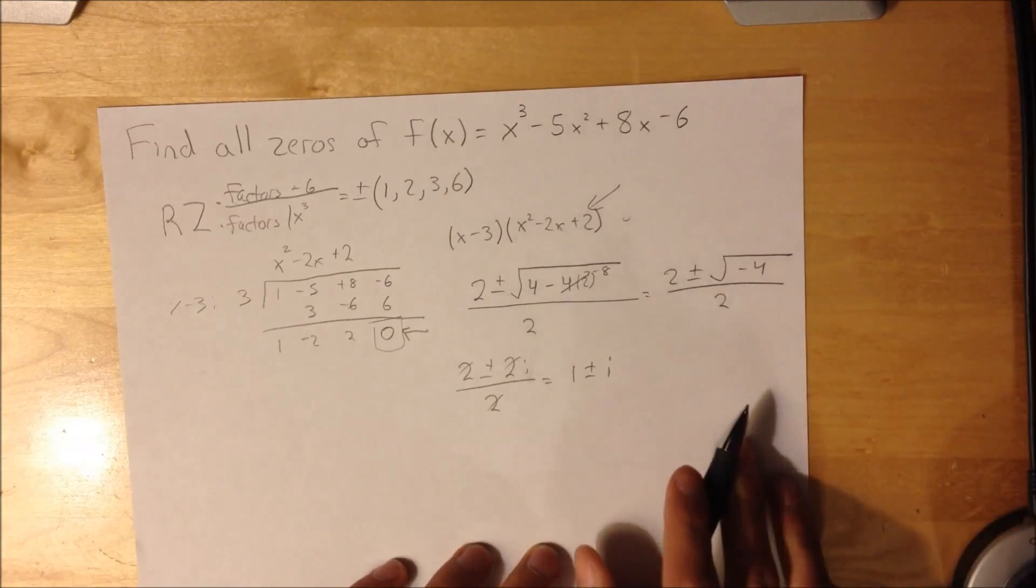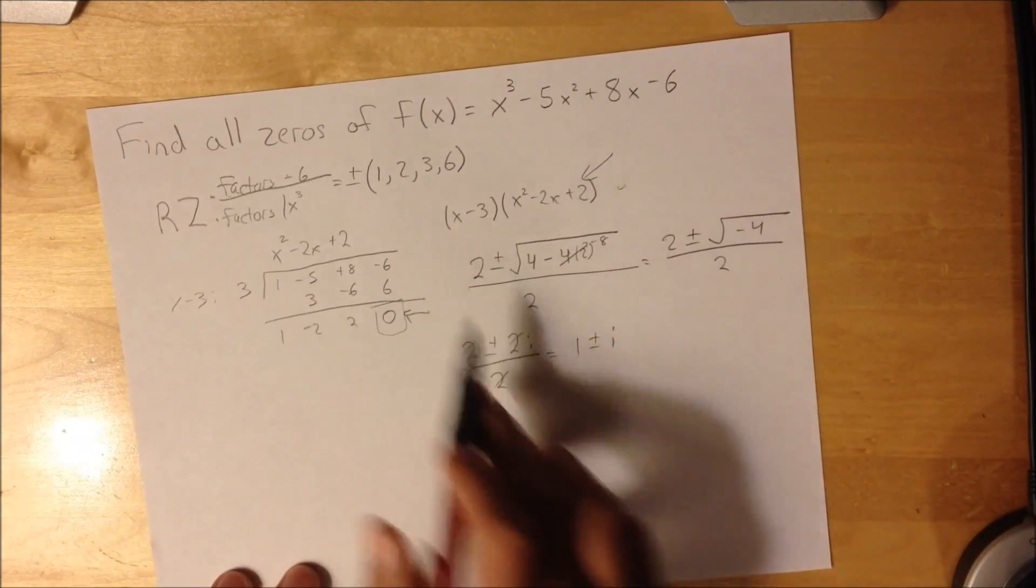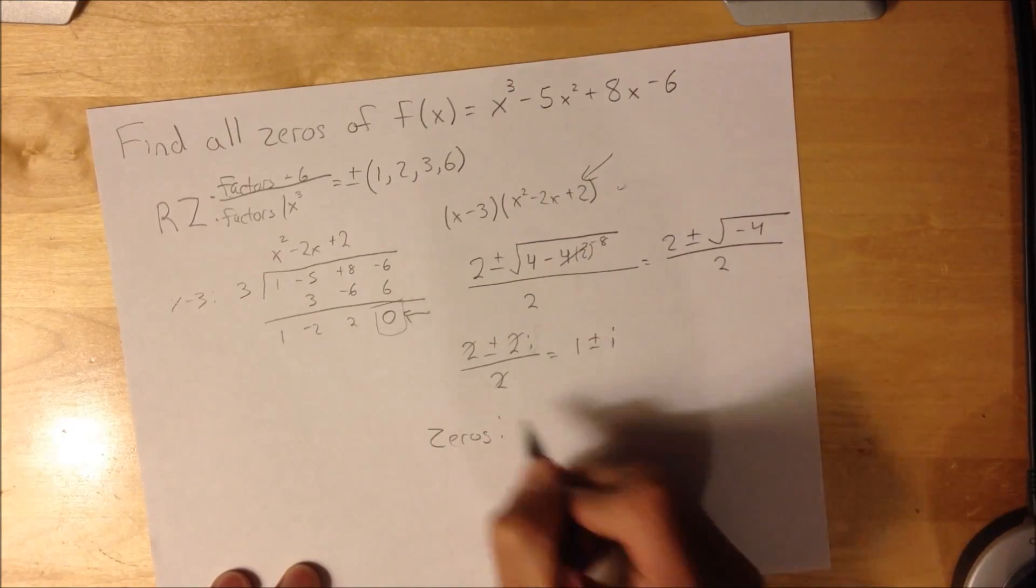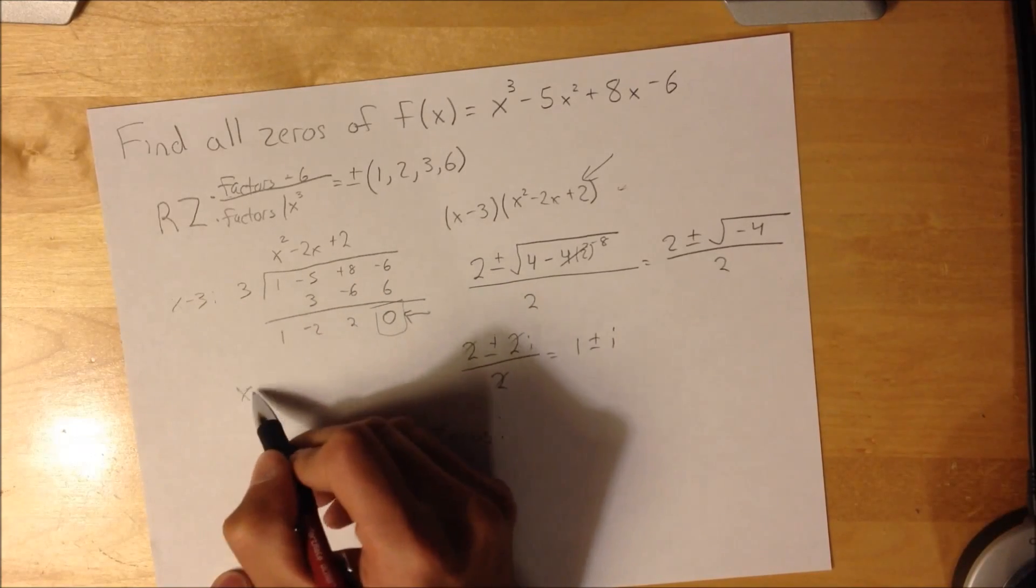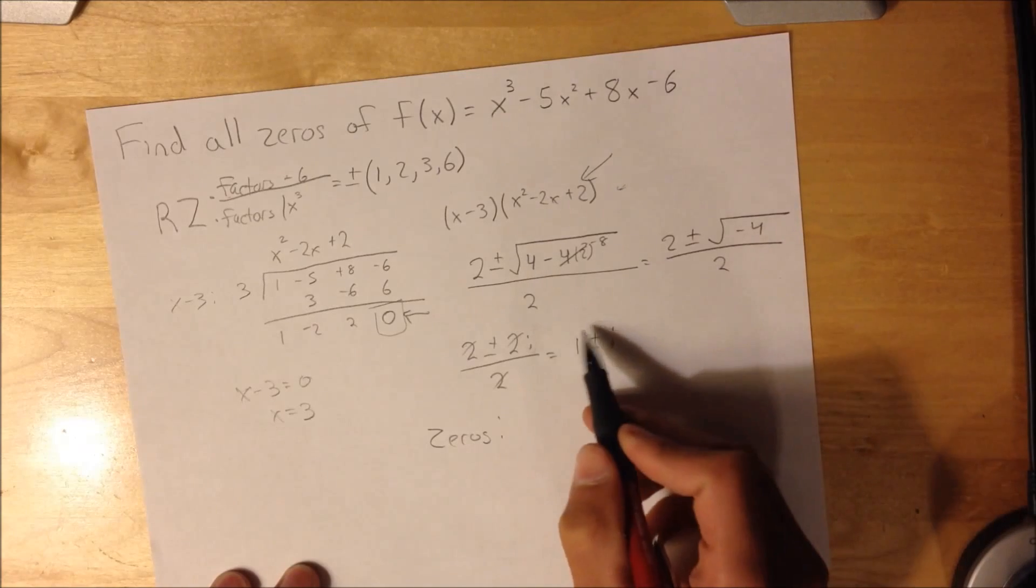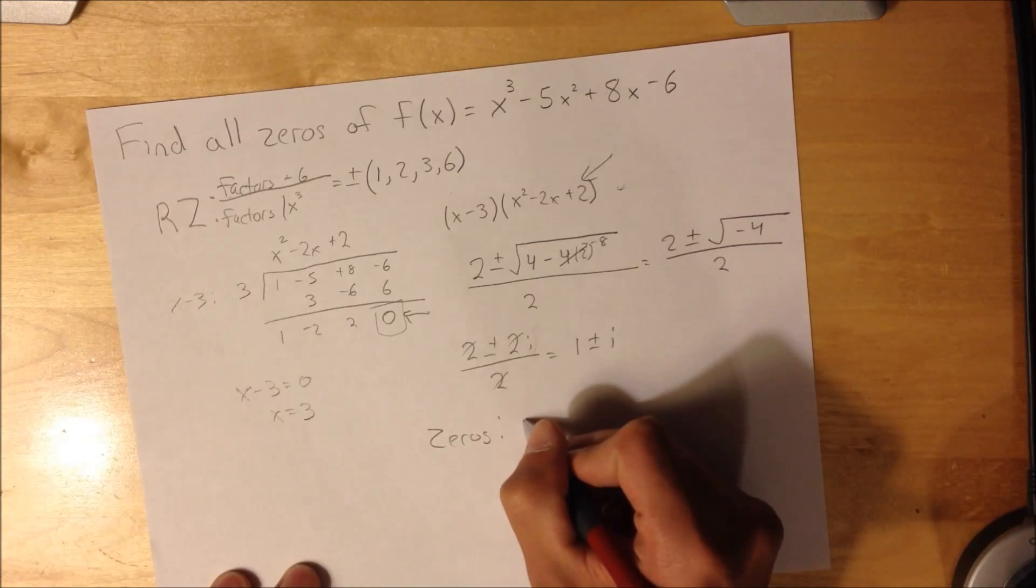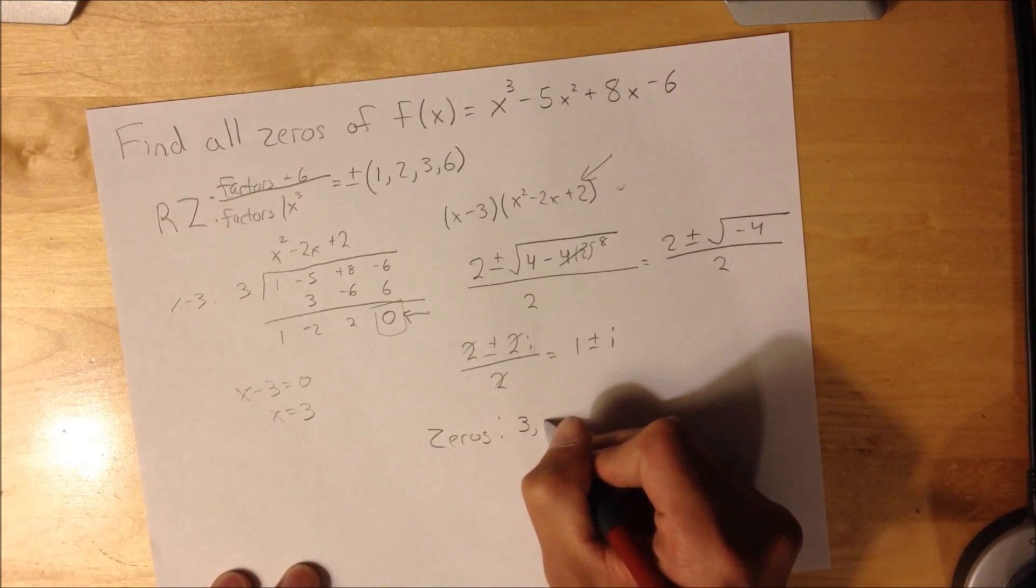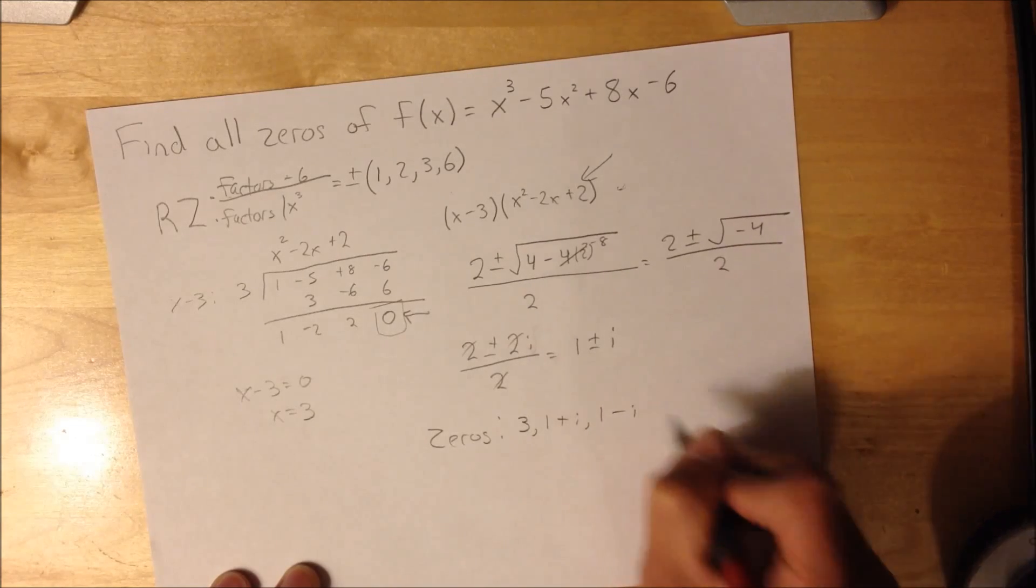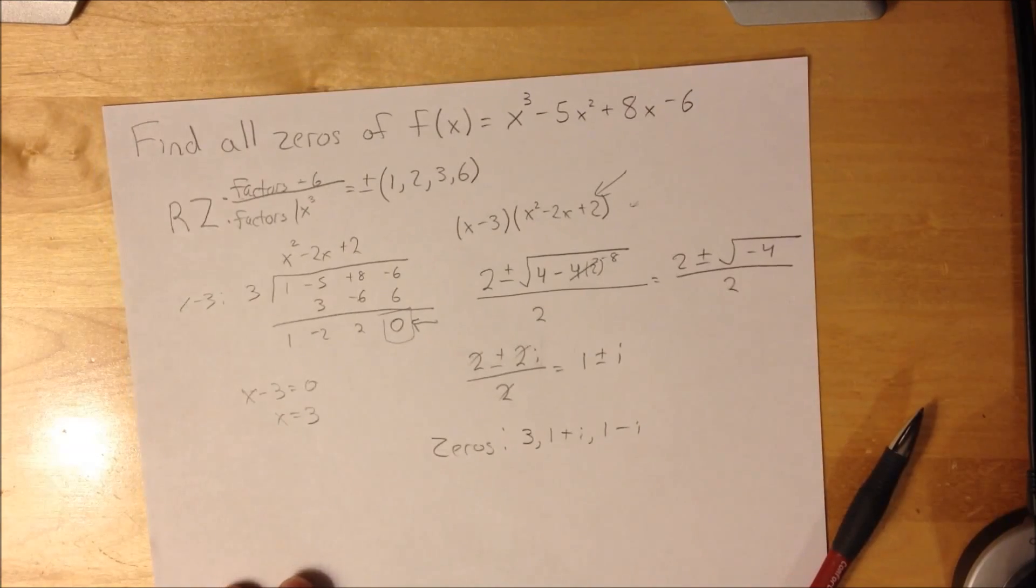So, alright, now I do have all the zeros. From x - 3, the zero is going to be 3. And then these two are the other zeros. So the zeros are 3, 1 + i, and 1 - i. And that's it.